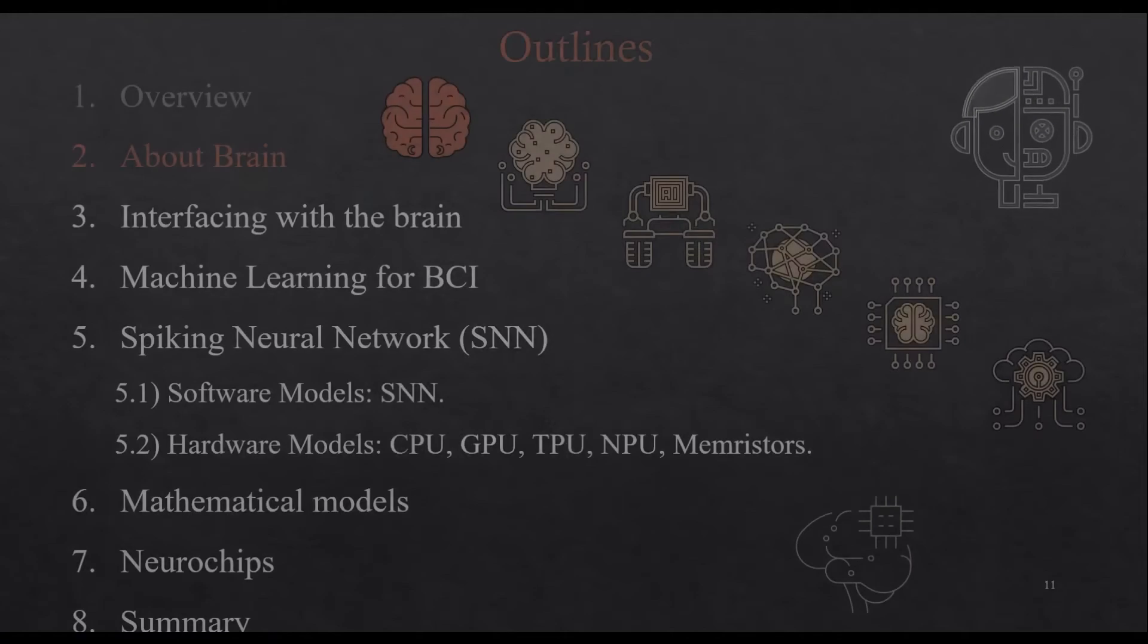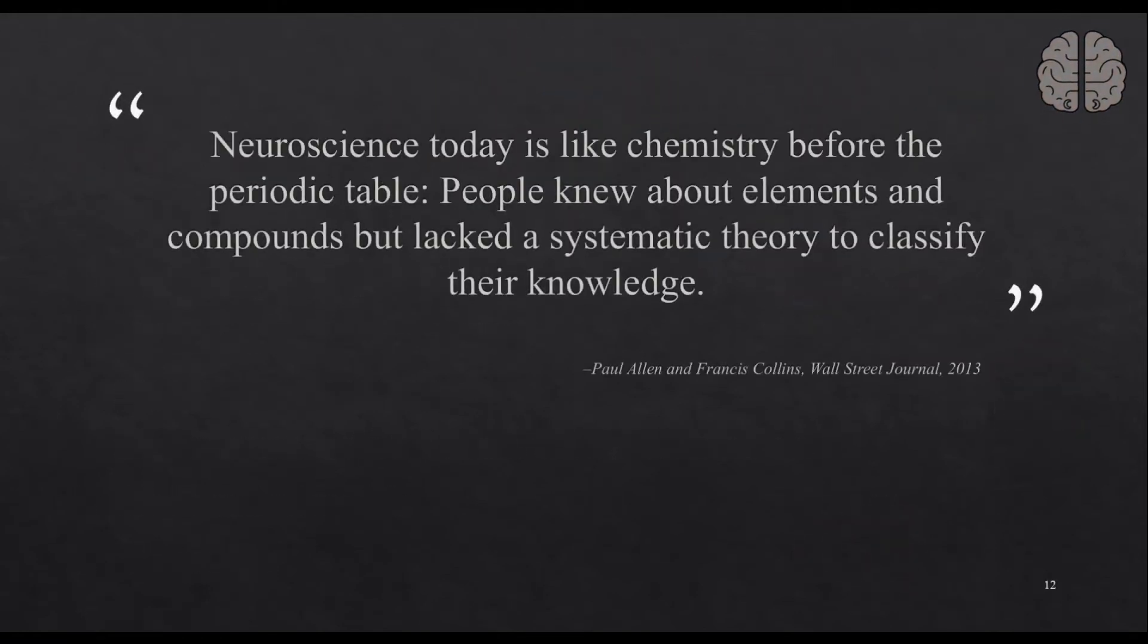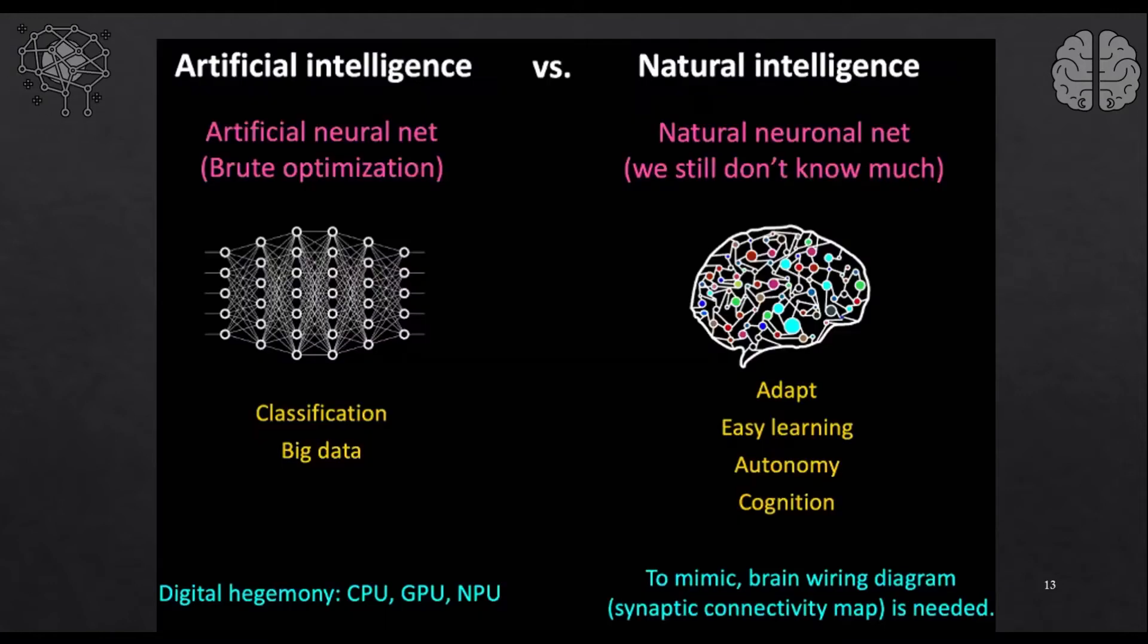About the brain, neuroscience theory is like chemistry before the periodic table. People knew about elements and components but lacked a systematic theory to classify their knowledge. We know different elements in the brain but we don't know exactly how they are working. For that we are making artificial intelligence to make this natural intelligence and run that artificial intelligence on chipsets that are behaving like the brain.